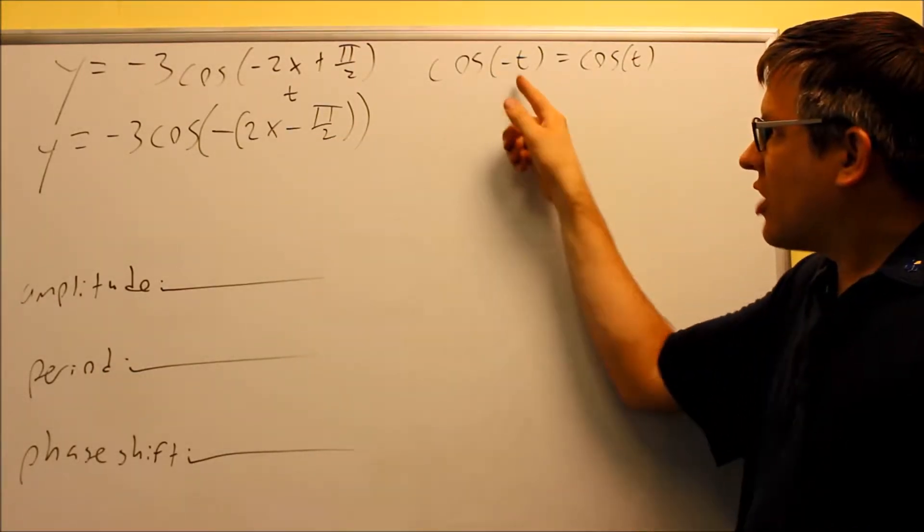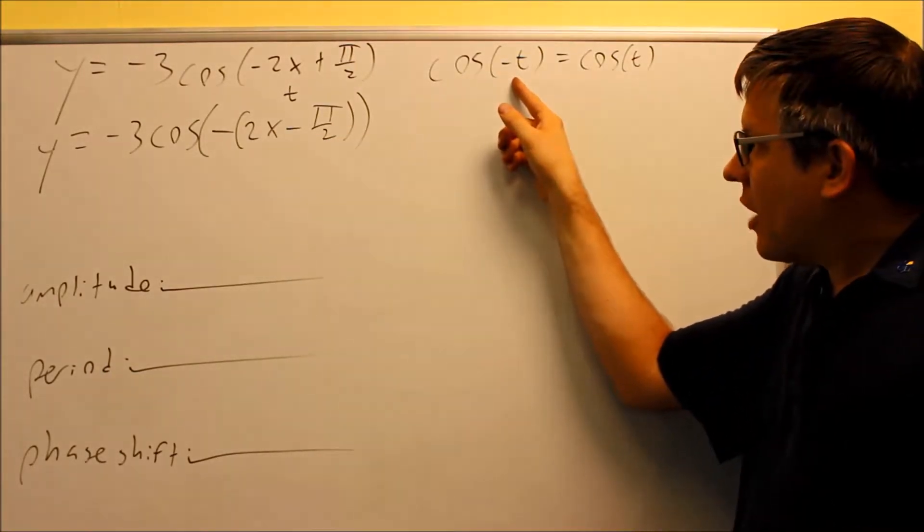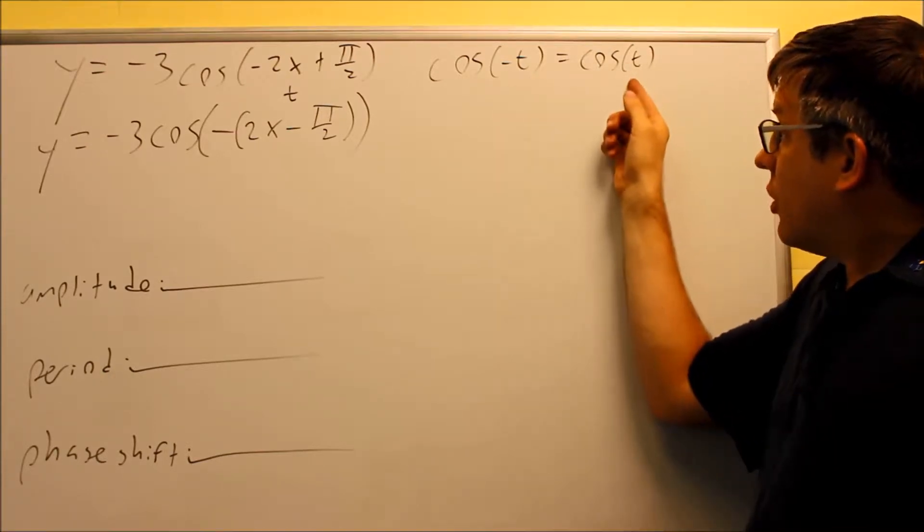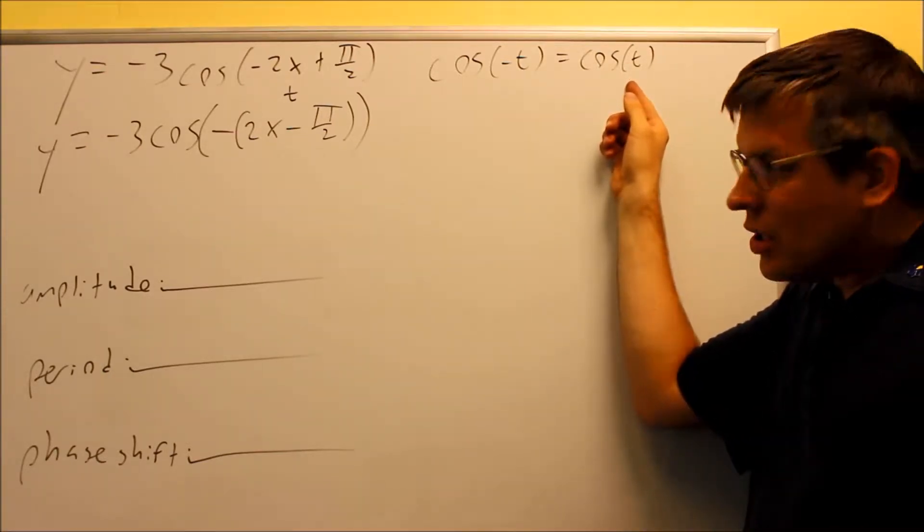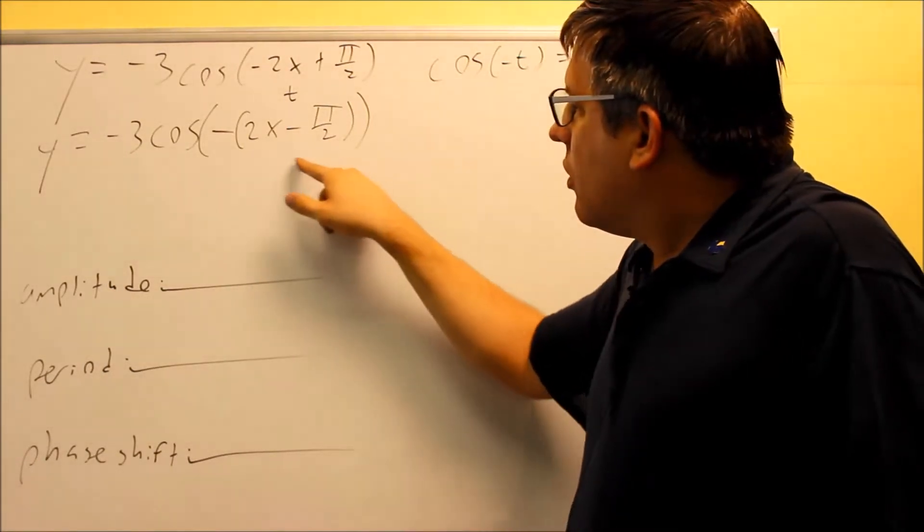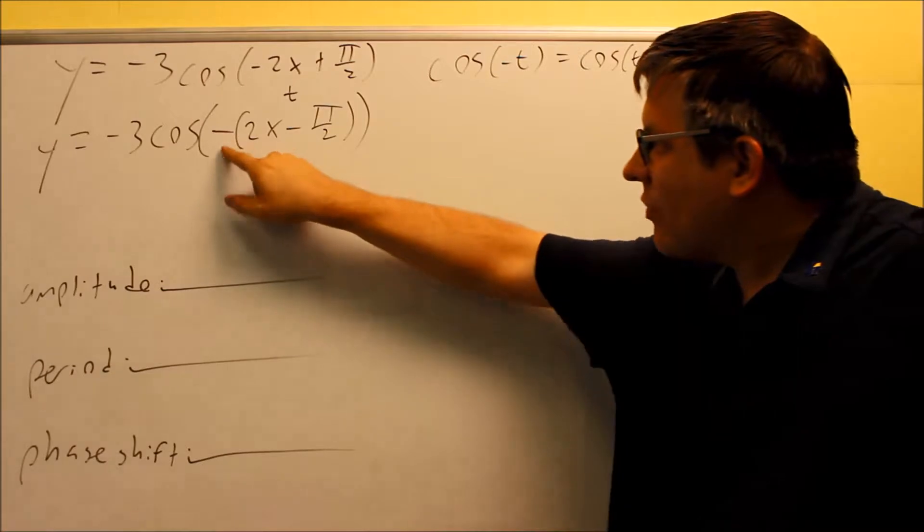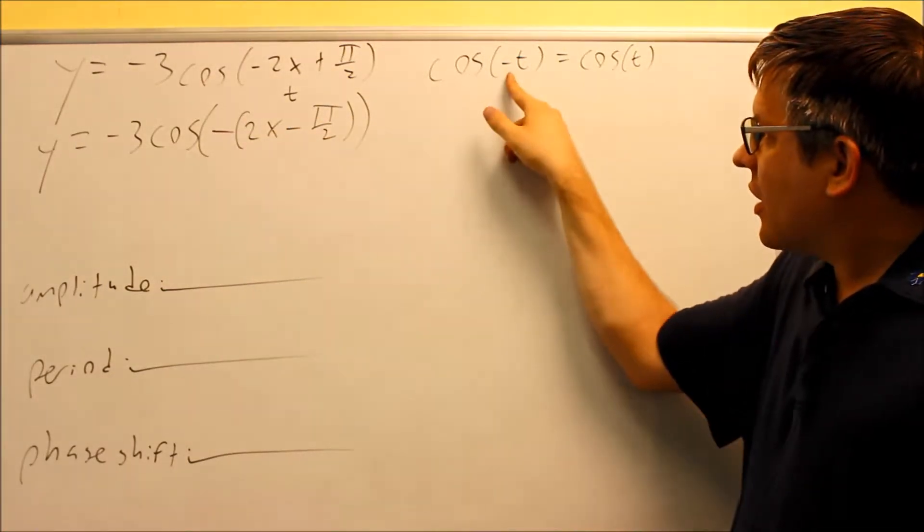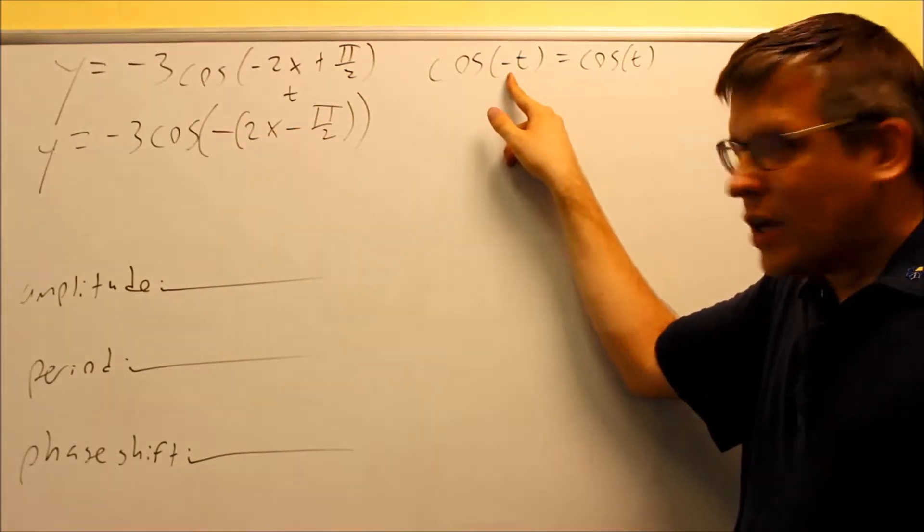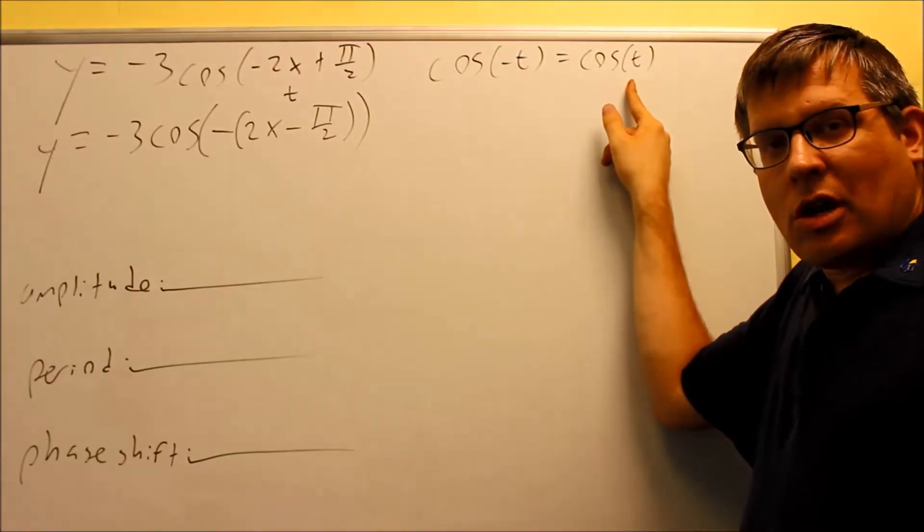So if I have cosine negative t, that means that I'm actually going to turn it into cosine positive t. So for this, I'm going to use this property. So what that property says is that the negative sign that's in here, that cosine negative t, that negative is actually going to go away. And I can rewrite the problem as a positive.